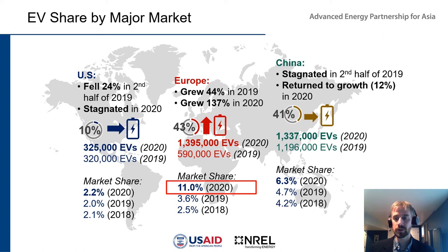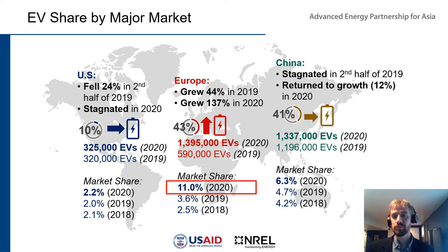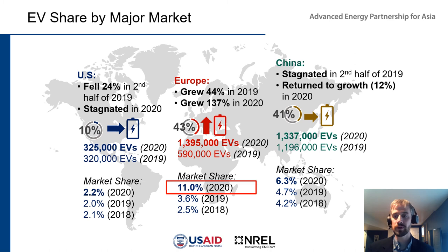Looking at EV share by major market in 2020: In the United States, there was a fall in EV share in the second half of 2019, then stagnation, up slightly to 2.2% market share in 2020, with a notable uptick in early 2021. Europe really took off in 2020 — market share grew 44% in 2019, then another 137% in 2020, up to 1.4 million electric vehicles and an 11% market share. Meanwhile, China stagnated in the second half of 2019 then returned to growth in 2020, with a 6.3% market share, having been surpassed by Europe as the largest EV market.